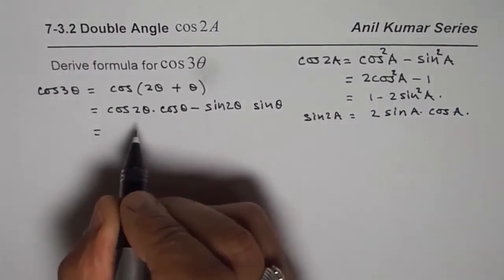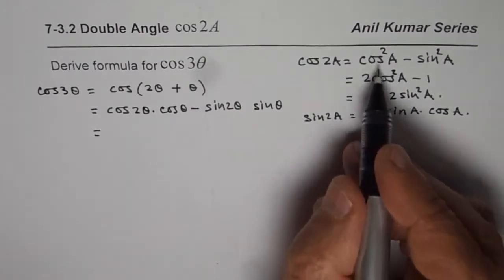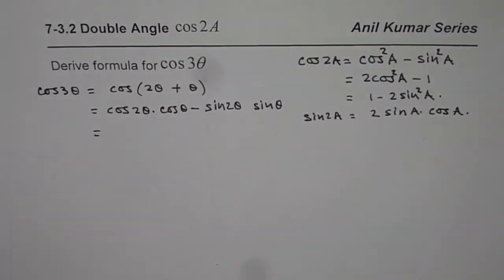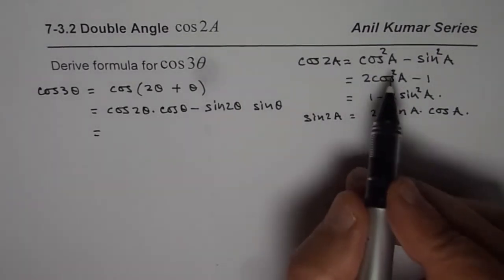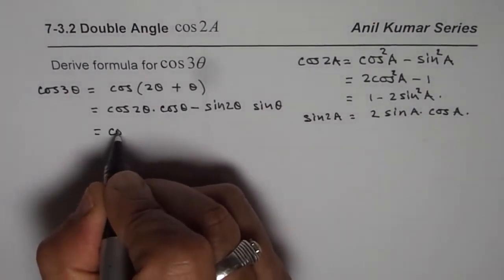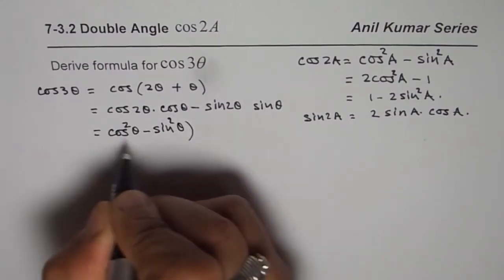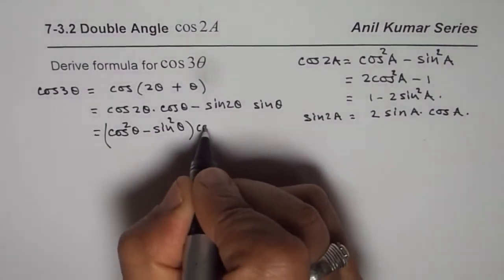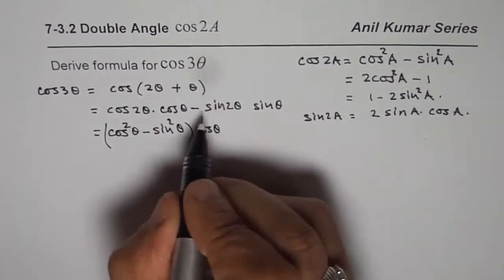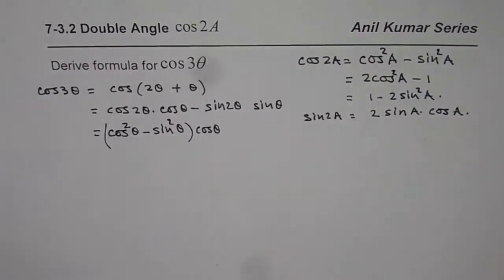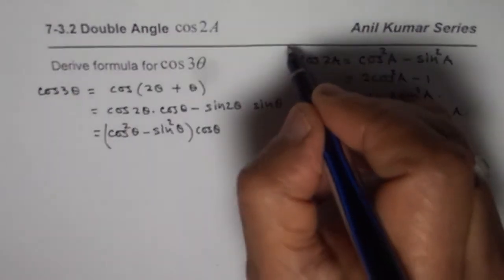Now when we have cos 2 theta we could use any one of these formulas. So let me use the first one which is cos square theta minus sine square theta. And then we will multiply by cos theta and here we have, let me just separate this out.